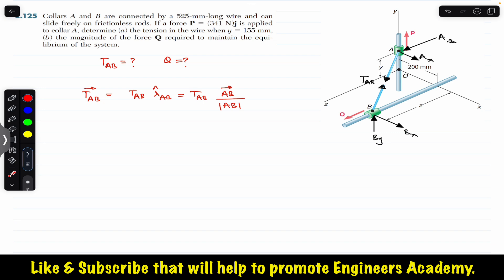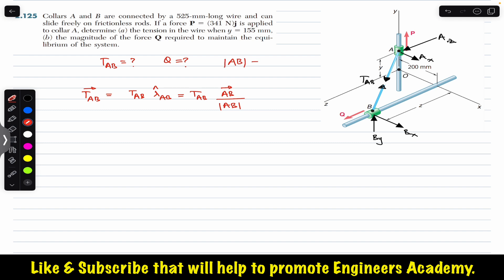The position vector from A to B tells us the position of point B relative to A, and the magnitude of the position vector tells us the direct distance between the two points. We are given that collars A and B are connected by a 525 mm long wire, so the direct distance between A and B is 525 mm. This means the magnitude of the position vector from A to B is 525 mm, which is the length of the wire.